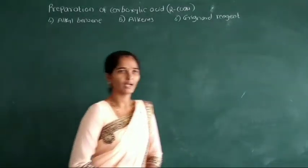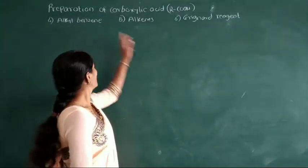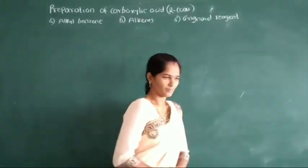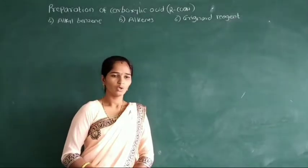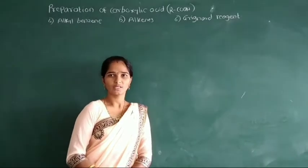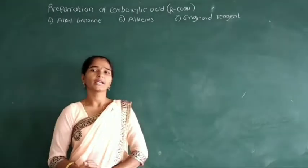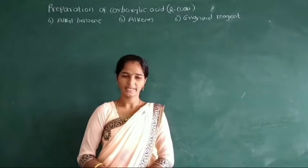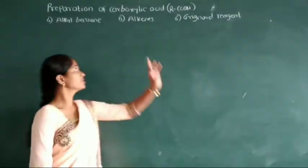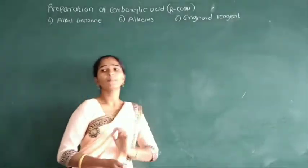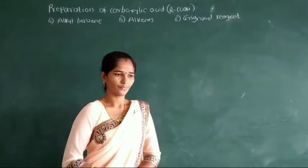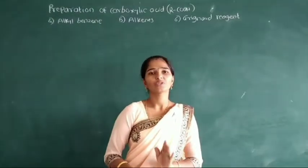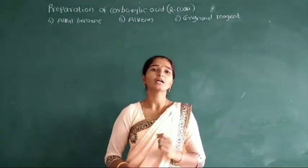Carbogenic acid is prepared from alkyl benzene, alkyl, and Grignard reagent. We will study first the preparation of carbogenic acid from the 4th method — that is, carbogenic acid is prepared from alkyl benzene. By using this method, aromatic carbogenic acids are prepared.